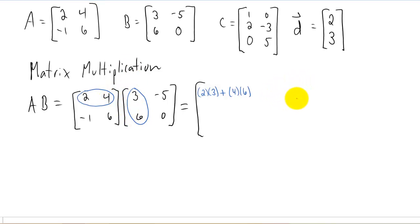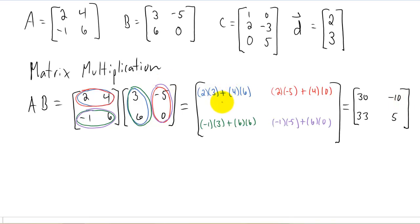To get our 1, 2 element of our matrix A times B, we're going to take the first row again except now we're going to do a dot product with the second column of B. Now we're looking for the 2, 1 element of our A, B matrix. And to get that, we're going to do a dot product of the second row of A with the first column of B. And finally, to get our 2, 2 element of our A, B matrix, we're going to do a dot product of the second column of A with the second column of B. And I think if you add all this stuff up here, you get this A, B matrix right here.